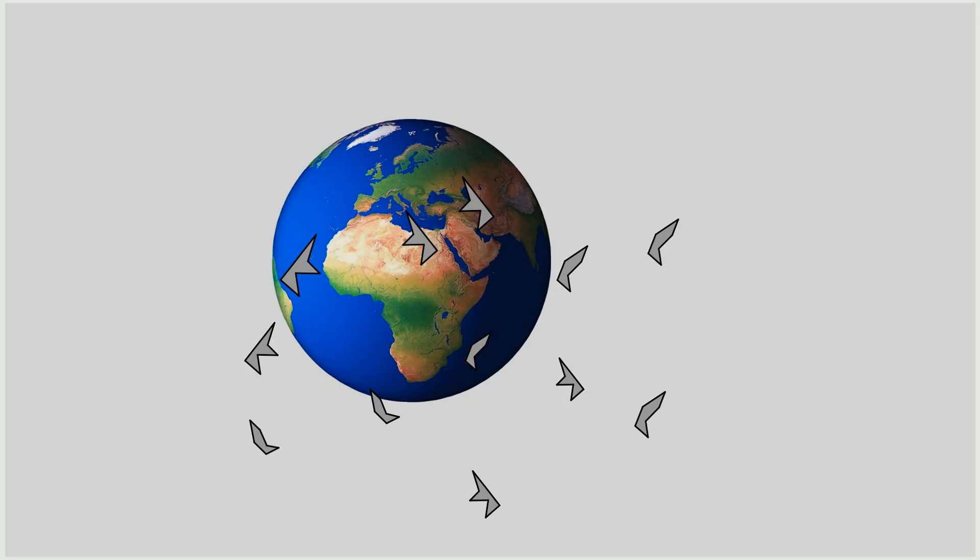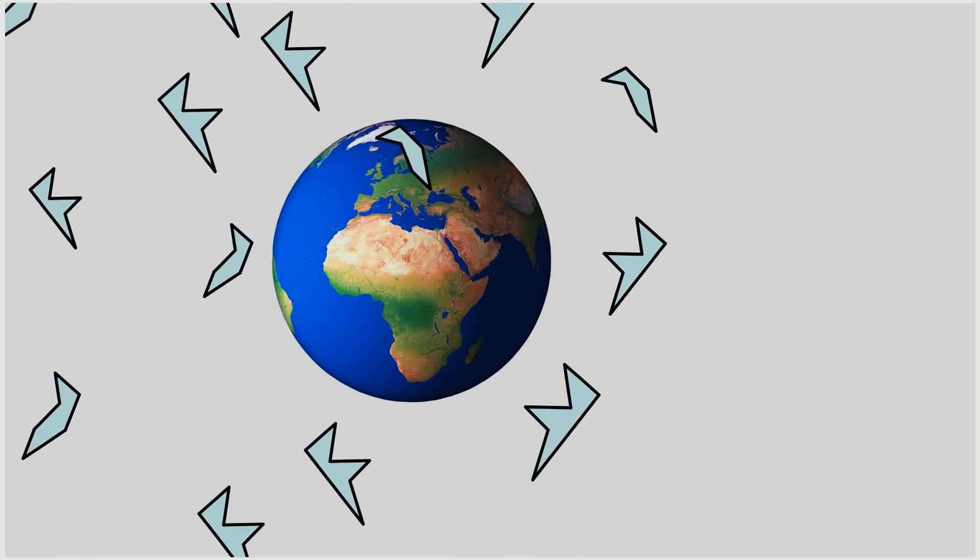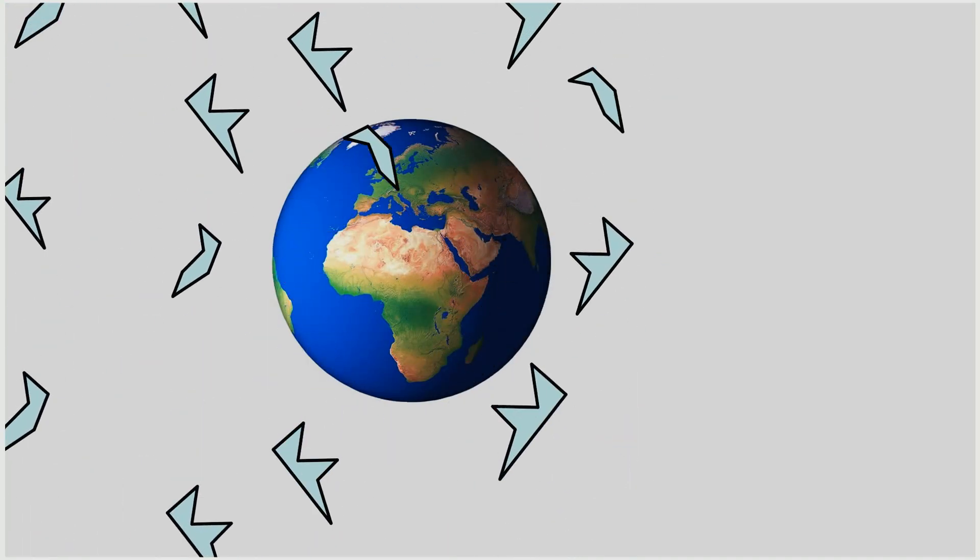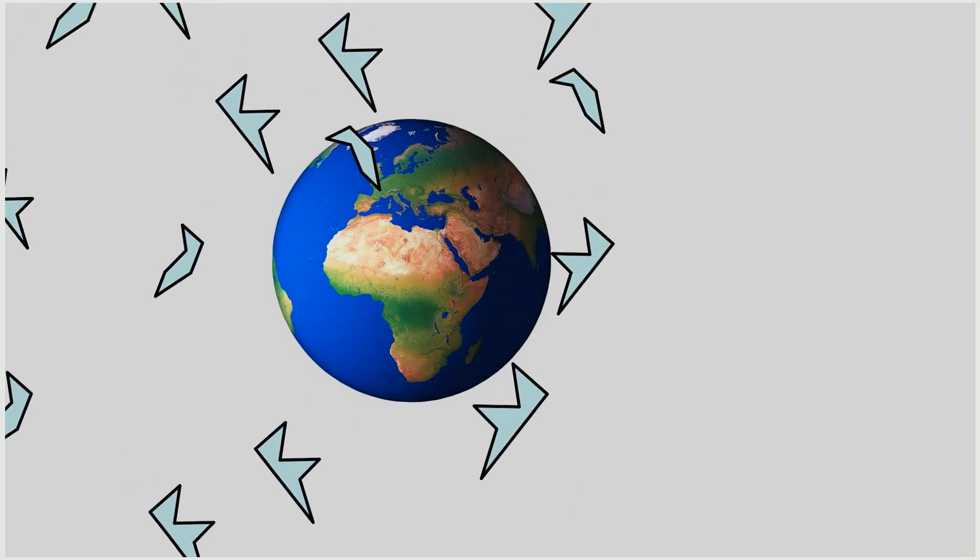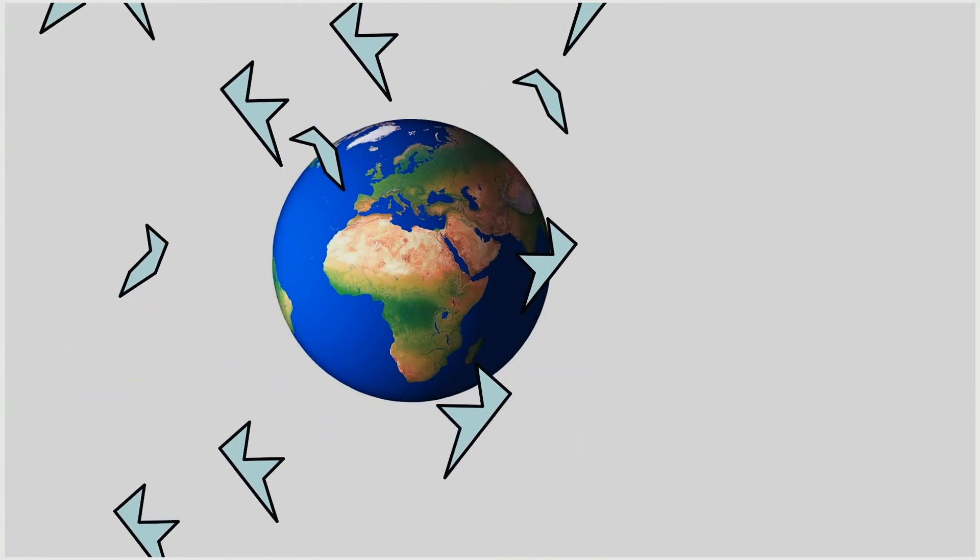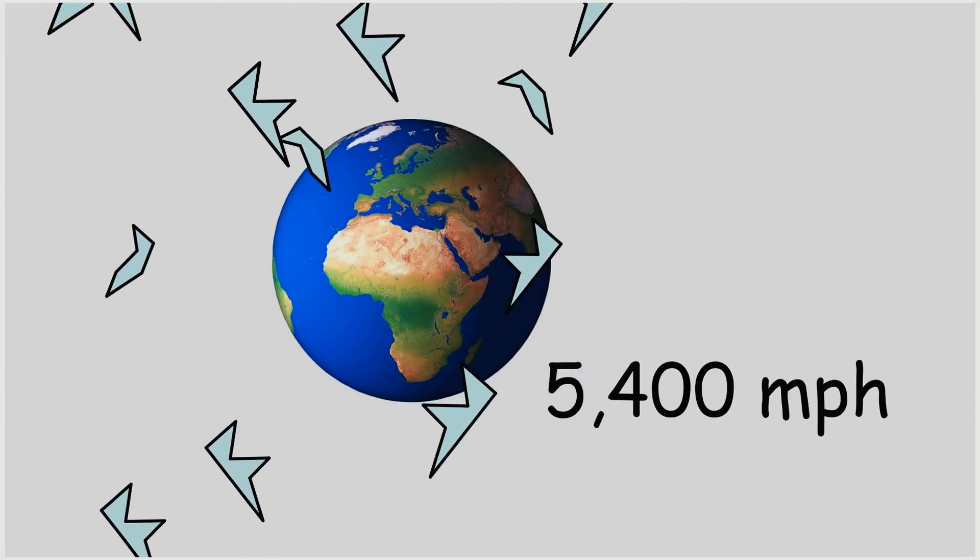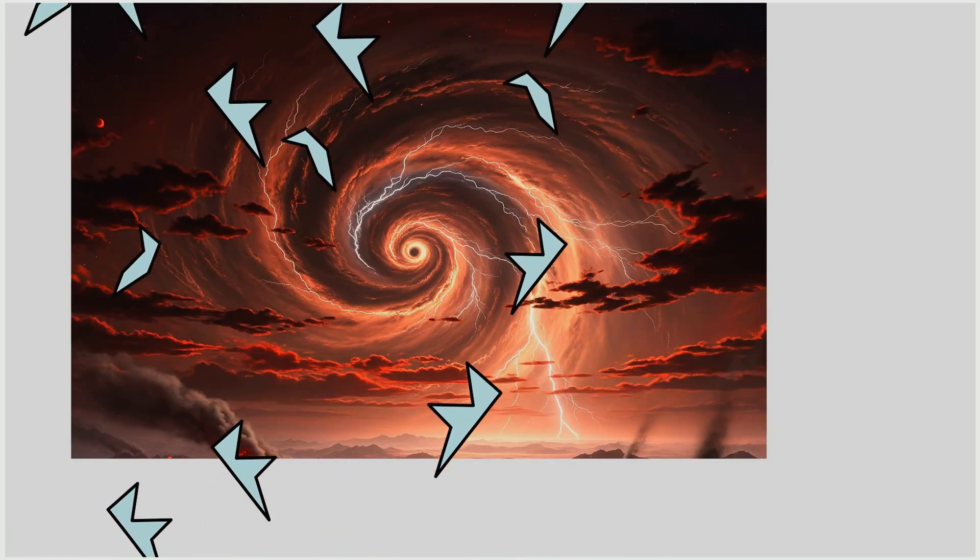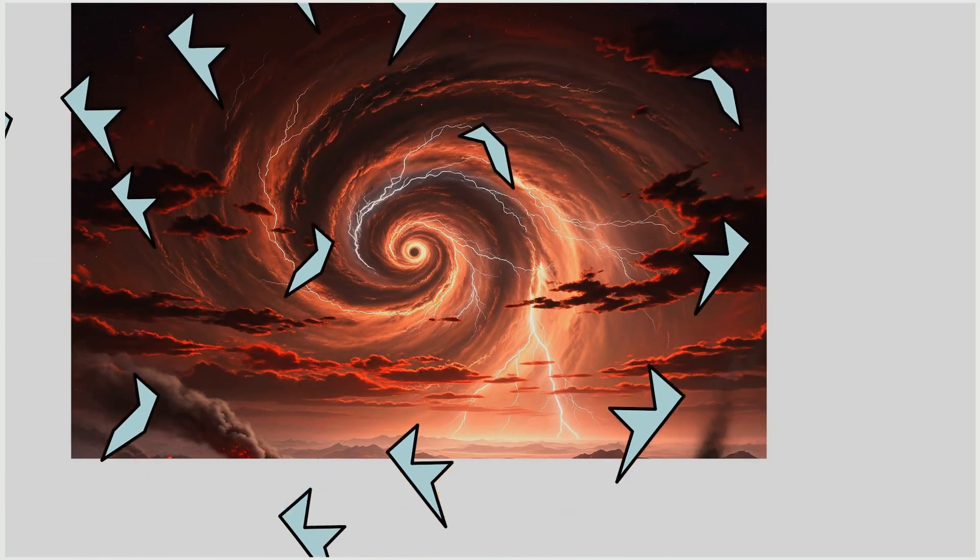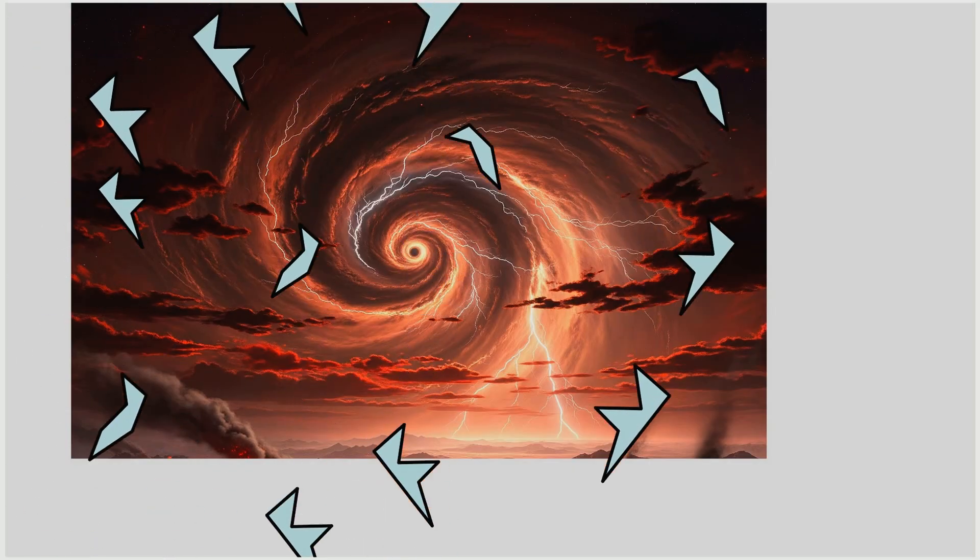This planet experiences glass rain, where shards of molten glass are blown sideways by winds reaching 8,700 kilometers per hour (5,400 miles per hour). These superheated winds carry the glass particles at hypersonic speeds around the planet in a continuous storm.